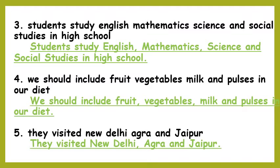Fourth: We should include fruit, vegetables, milk, and pulses in our diet. W of 'we' will be in capital because it is the first letter of the sentence. We put commas to separate fruit, vegetables, milk, and pulses. We rewrite it as: We should include fruit, vegetables, milk, and pulses in our diet, full stop.